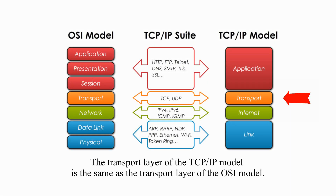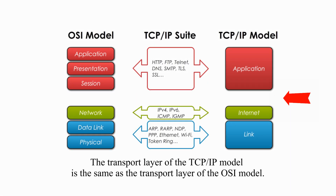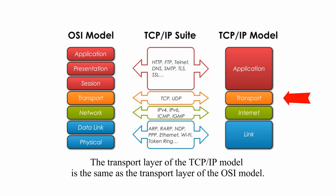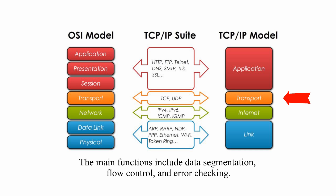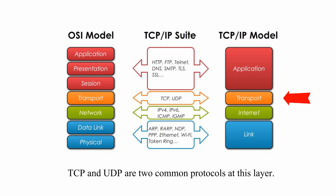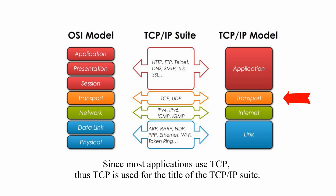The transport layer of the TCP/IP model is the same as the transport layer of the OSI model. The main functions include data segmentation, flow control, and error checking. TCP and UDP are two common protocols at this layer. Since most applications use TCP, TCP is used for the title of the TCP/IP protocol suite.